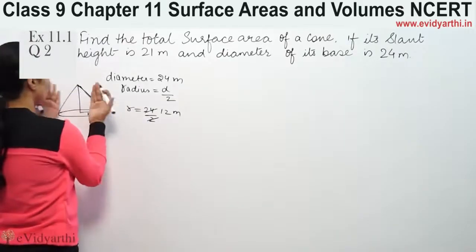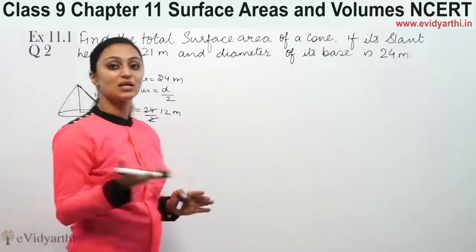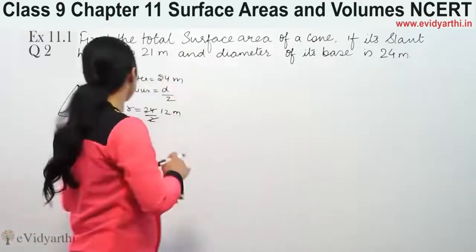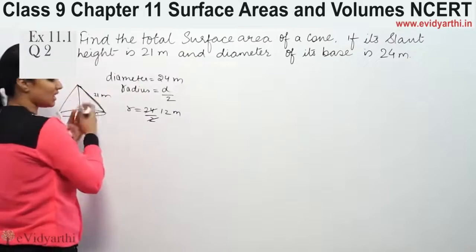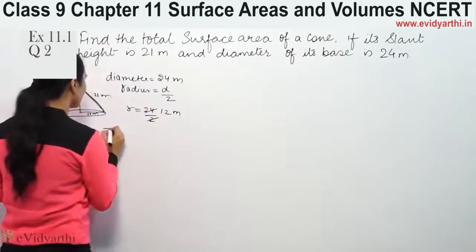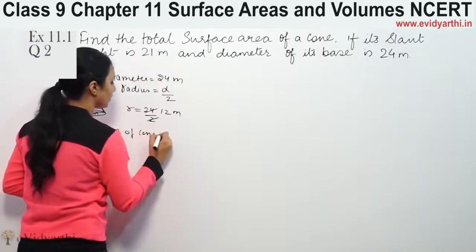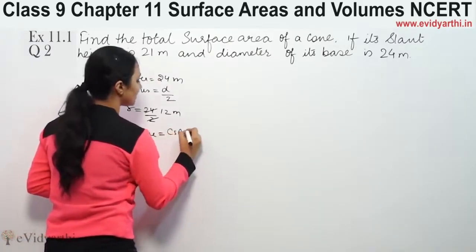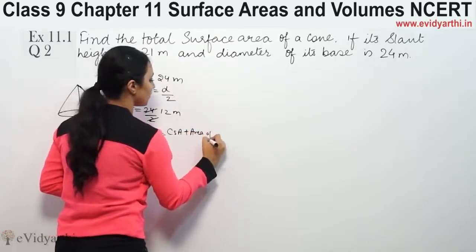Total surface area means the cone's upper triangular portion and its base, both are included. This triangular portion gives the curved surface area, and then the circular base is included. So total surface area TSA of cone will be equal to curved surface area plus area of base.